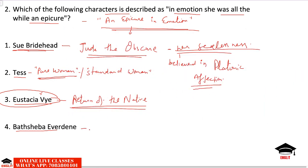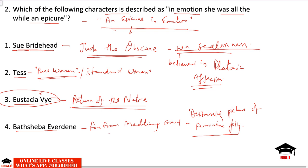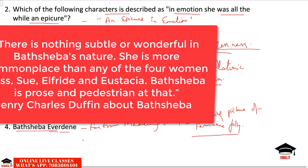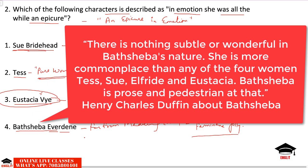Bathsheba Everdeen is featured in Far From the Madding Crowd. She is described as a distressing picture of feminine folly — the adage 'frailty, thy name is woman' clearly applies to her. She is an average lady who commits many mistakes despite good heredity, education, and upbringing. Critic Charles Duffin remarks: 'There is nothing subtle or wonderful in Bathsheba's nature. She is more commonplace than Tess, Sue, and Eustacia. Bathsheba is prose and pedestrian at that.'